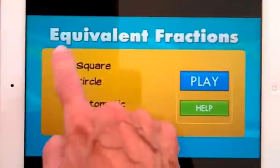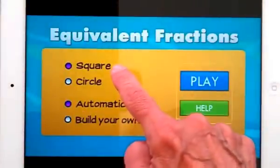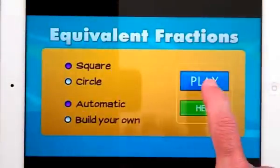So I tap on it, and Equivalent Fractions, the default is square and automatic. We'll go for that. Play.